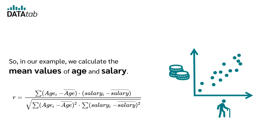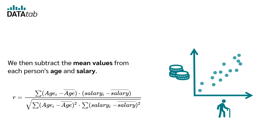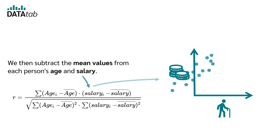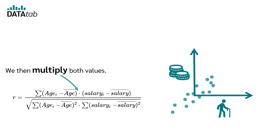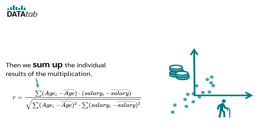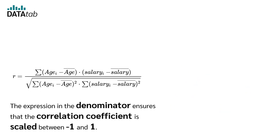So in our example we calculate the mean values of age and salary. We then subtract the mean values from each person's age and salary. We then multiply both values and sum up the individual results of the multiplication. The expression in the denominator ensures that the correlation coefficient is scaled between minus 1 and 1.